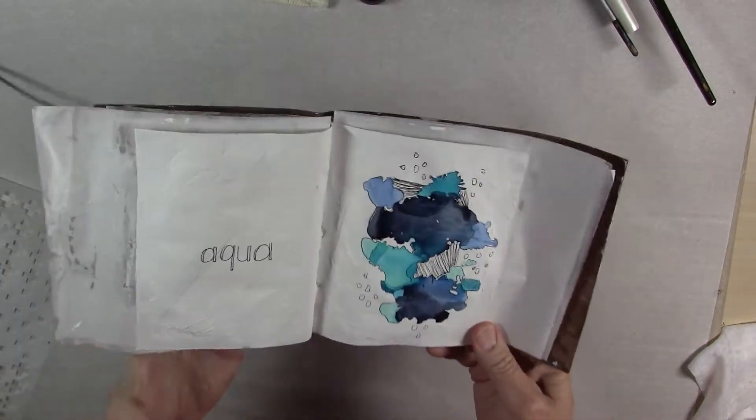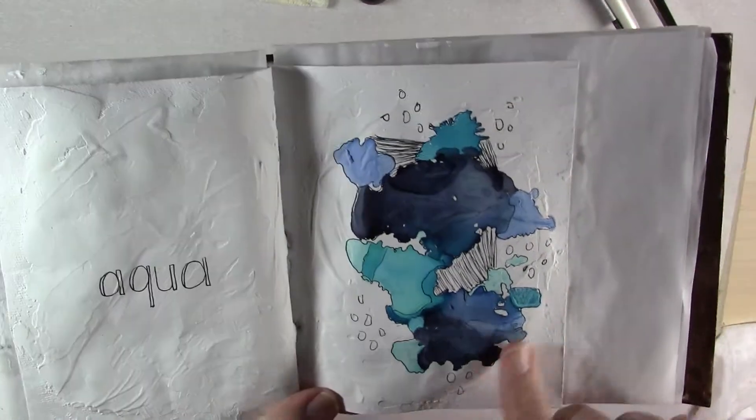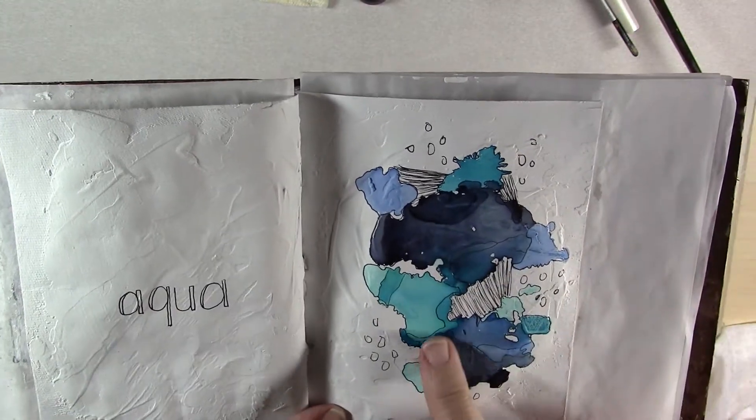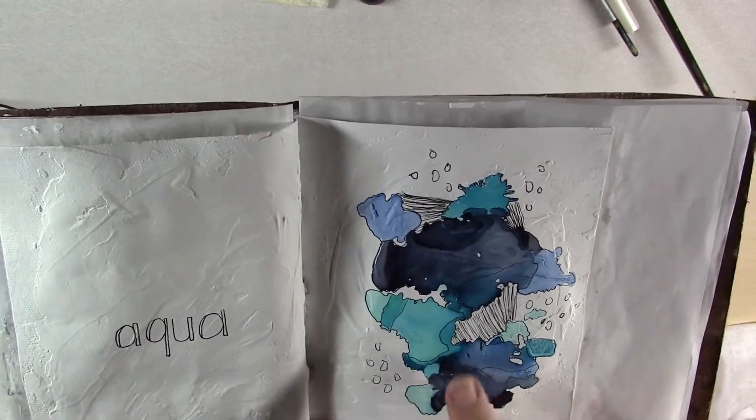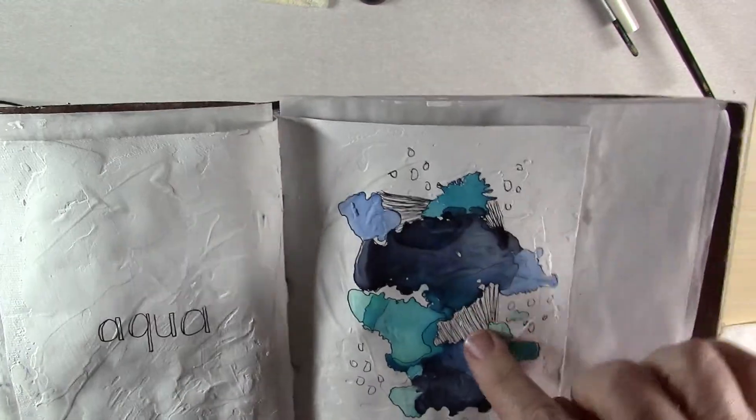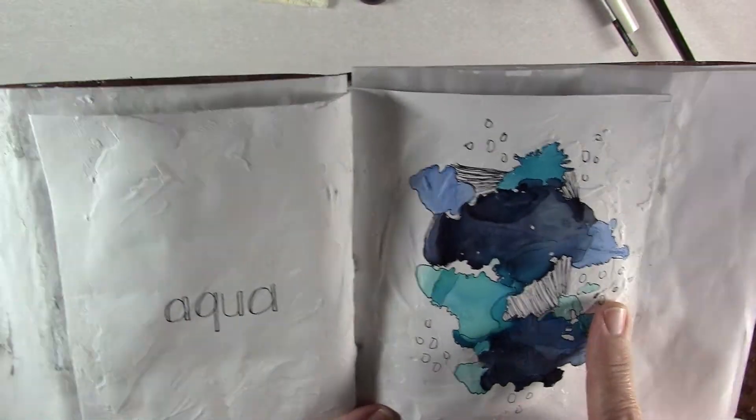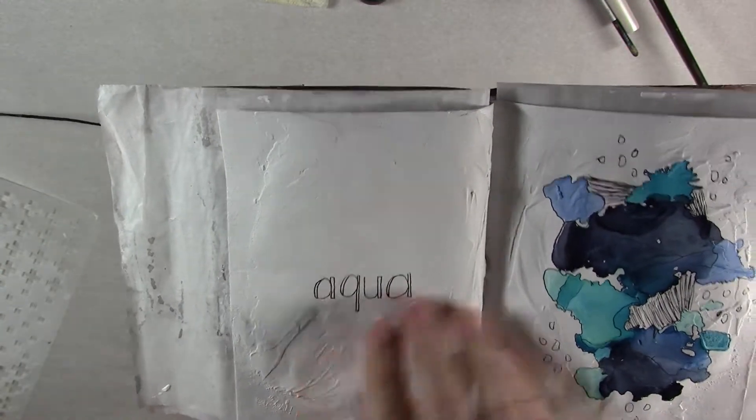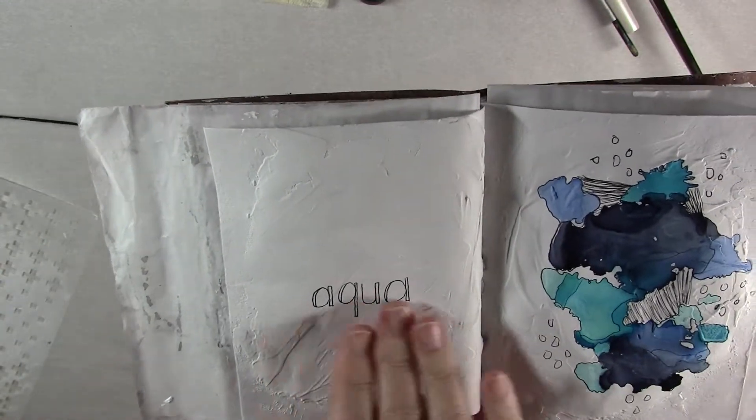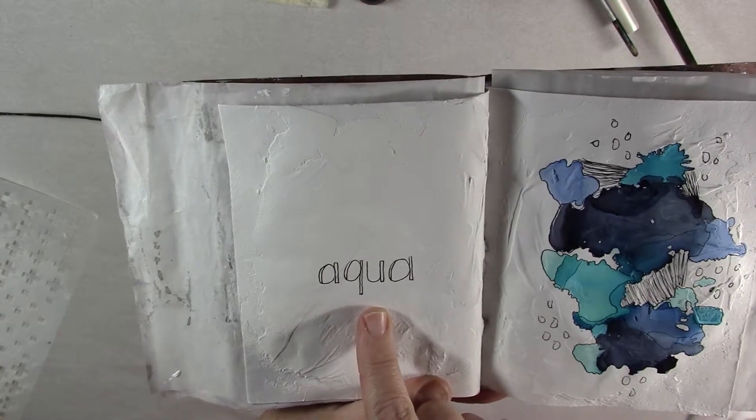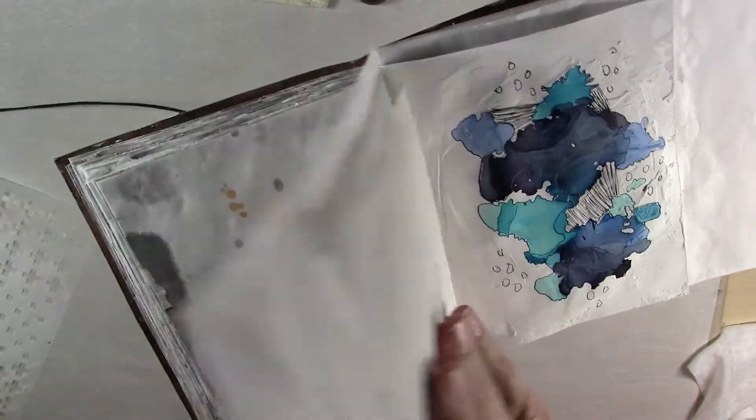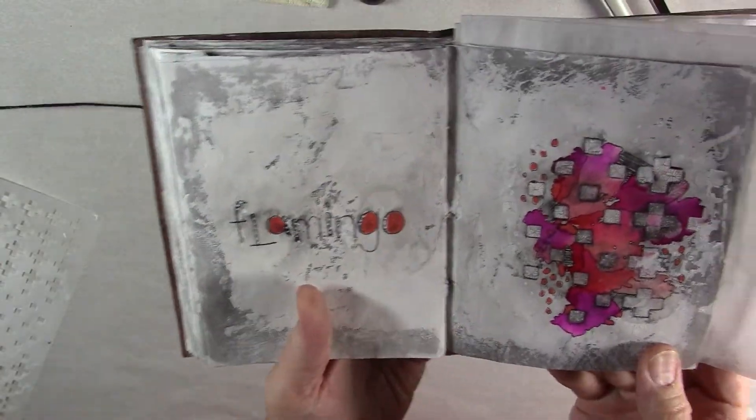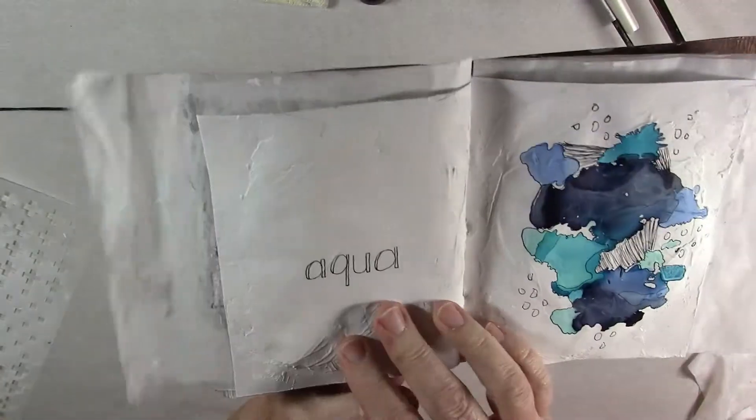Alright, so I am back. I went ahead and you can see where I've outlined all the different shapes and I've added some of the lines here where there's different color variations. Then on every page I've added some hash marks, some random circles, and then also on every page I actually use the colors for the alcohol ink as my inspiration. So I went ahead and wrote my blue word here. You can see like on this page back here I used the word flamingo, which was one of the alcohol colors that I used here.